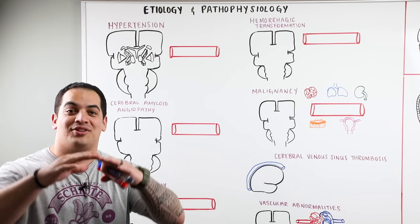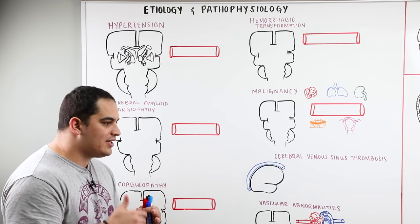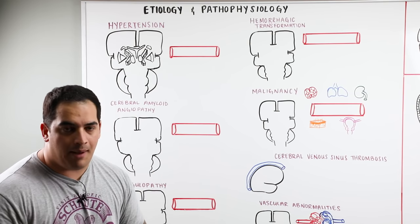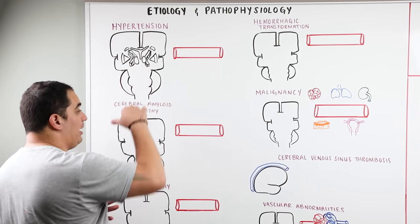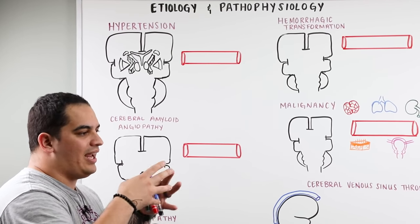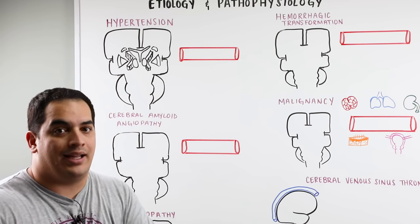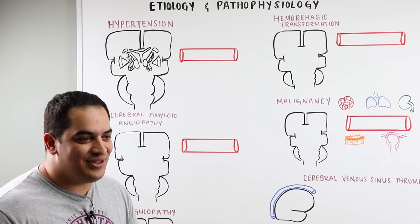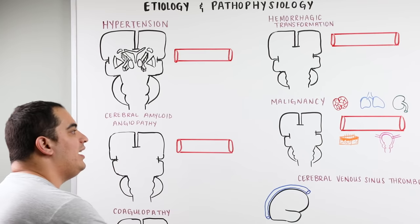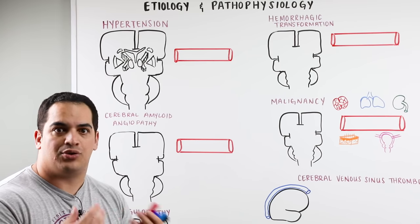Let's start off talking about the etiology and pathophysiology of intracerebral hemorrhage — what causes it and how do these causes lead to a bleed within the brain. There are two subtypes: non-traumatic intracerebral hemorrhage, which we'll focus on, and traumatic intracerebral hemorrhage, where the etiology is obvious — some type of blunt force or penetrating trauma.